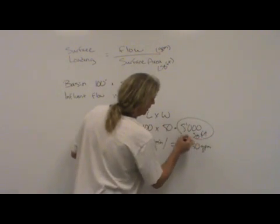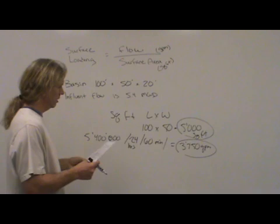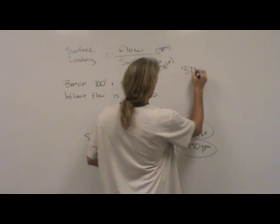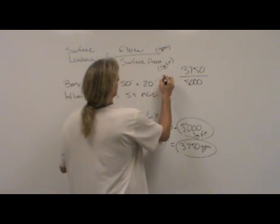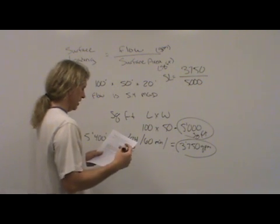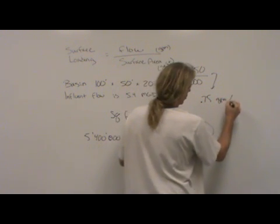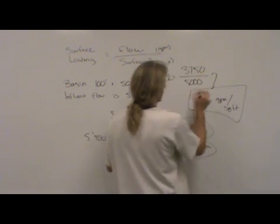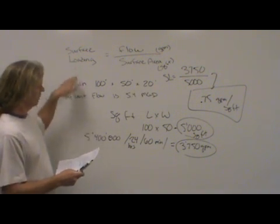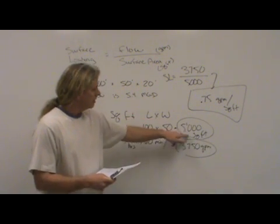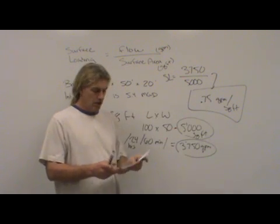So, now we have the two things that we need to solve the problem. Surface loading rate equals our flow in gallons per minute divided by our surface area in square feet. Our flow in gallons per minute is 3,750. Our surface area in square feet is 5,000. So, you take 3,750 divided by your 5,000, and you would get your answer, which is 0.75 gallons per minute per square foot. Flow divided by surface area. Flow, we're converting million gallons a day down to gallons per minute. Surface area, length times the width, and you get your square feet. Divide your flow by your surface area, and you get your answer, 0.75 gallons per minute per square foot.